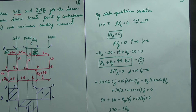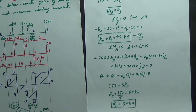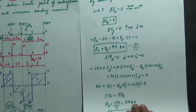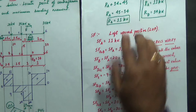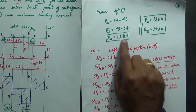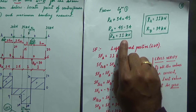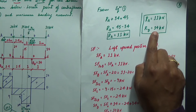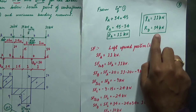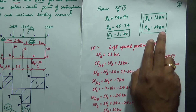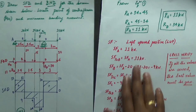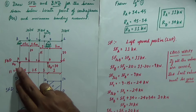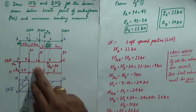Applying the sign convention — clockwise positive, anti-clockwise negative — and simplifying, you get RD = 34. Substituting back into equation one, RA = 11 kN. Cross-verification: 11 + 34 = 45. Yes, 45 is correct, so the reaction supports are correct.